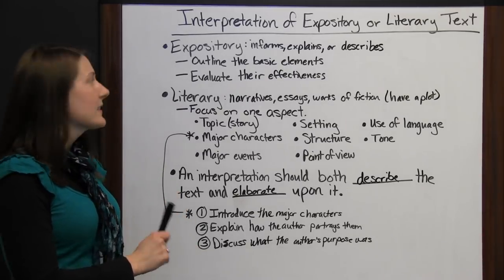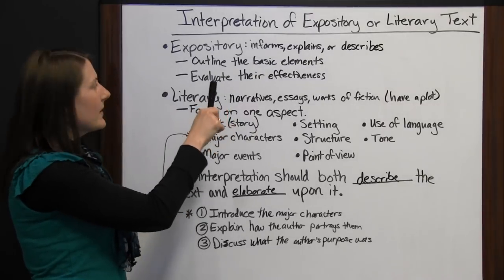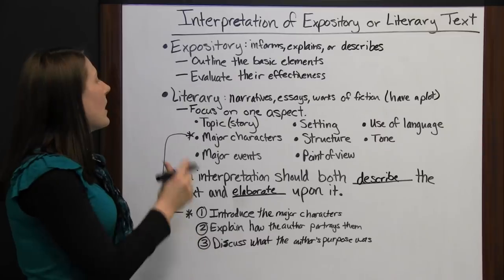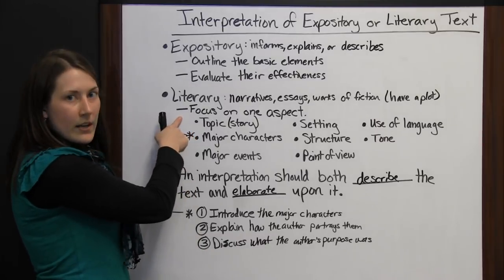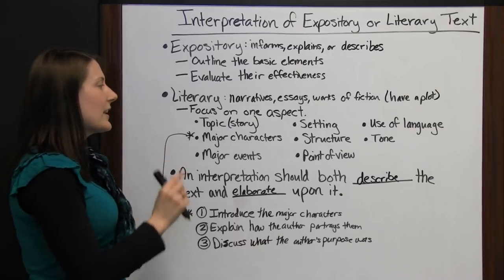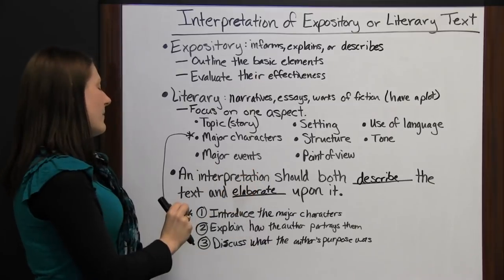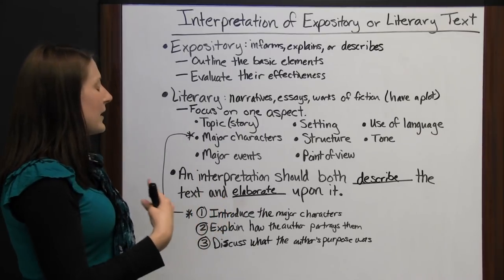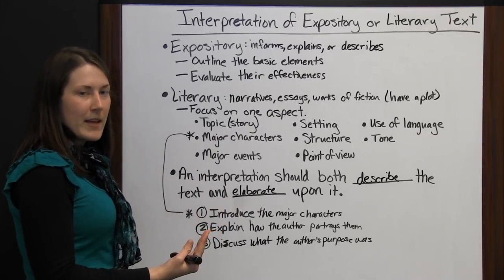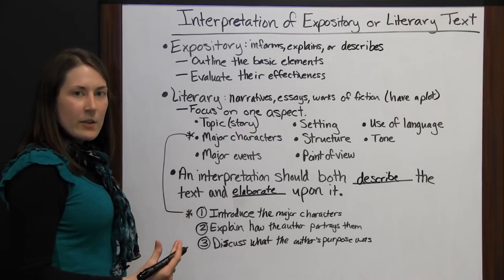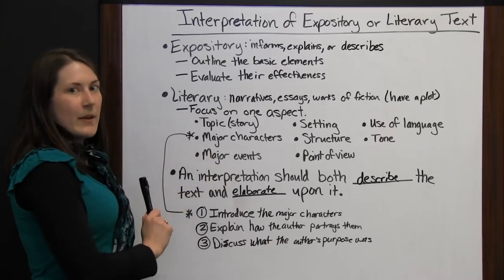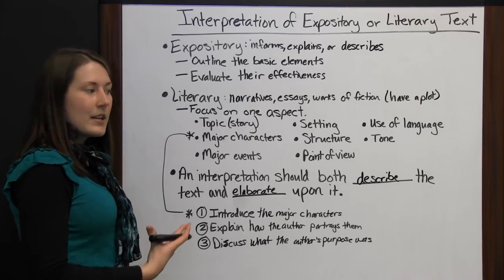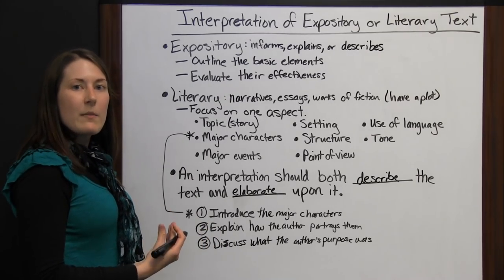When interpreting a text, with expository you want to outline the basic elements and evaluate their effectiveness. With literary works, focus on one aspect out of all the different things you could focus on — pick just one, describe it from the text based on what the author actually said, and elaborate upon it. Give your opinion on what you think the author meant. It's an interpretation, so everyone's is going to be a little different. Since the author knew he was writing to lots of different readers, try to make your interpretation unique.